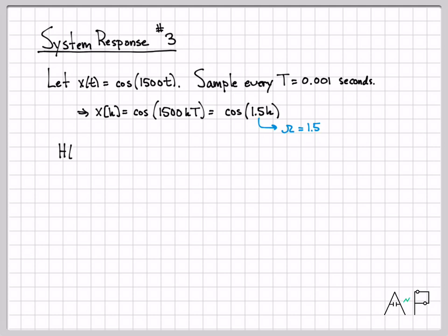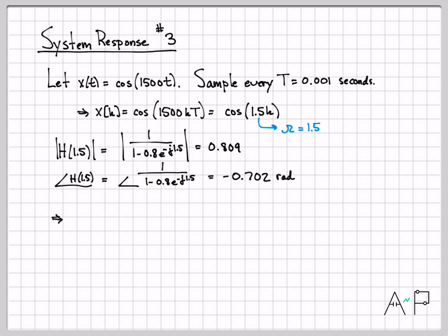So I replace omega with 1.5. I get the amplitude response. I replace omega with 1.5. I take the angle of this complex quantity, and I get minus 0.702 radians. And now again, I know the output of my discrete time system.